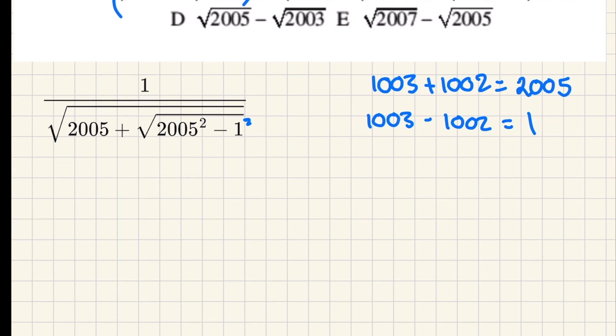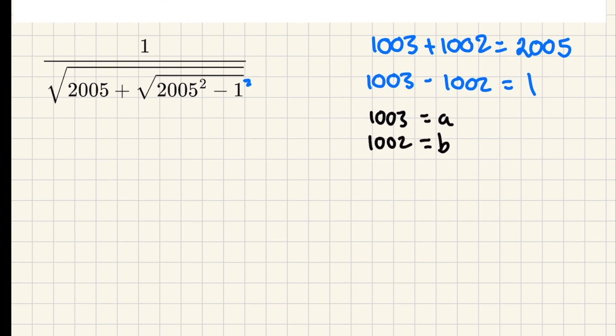So the first thing I'm going to do to make the writing easier, and I recommend you do this in the maths challenges as well if you want to save time, is you actually do a substitution. Just algebraically, I'm going to say a thousand and three is a, and a thousand and two is b.